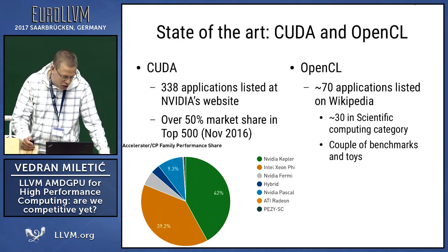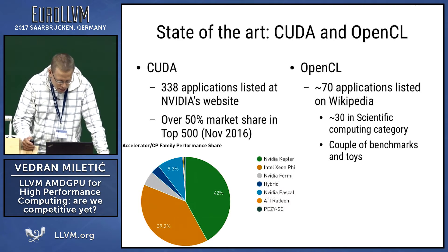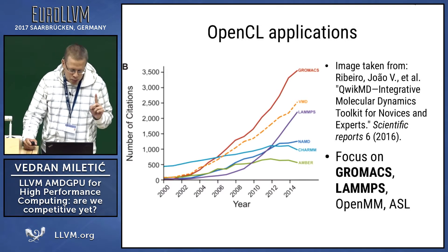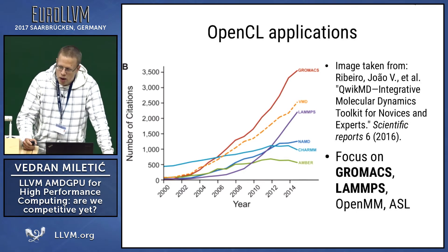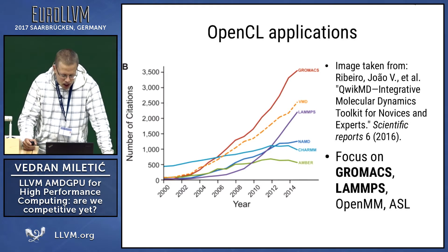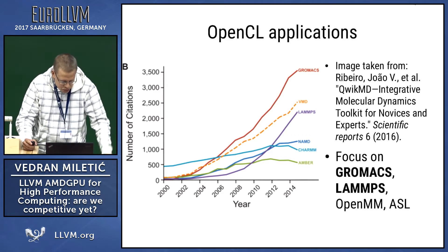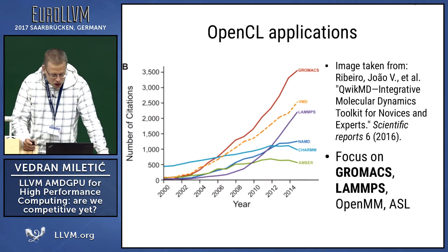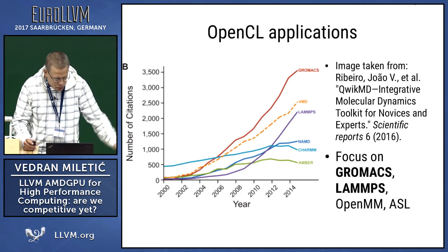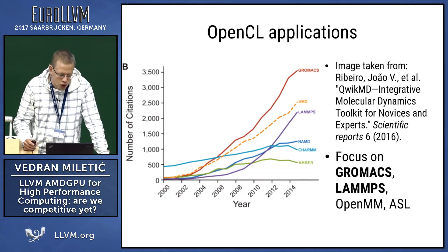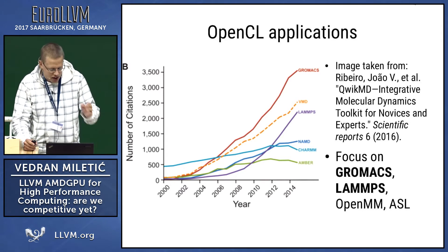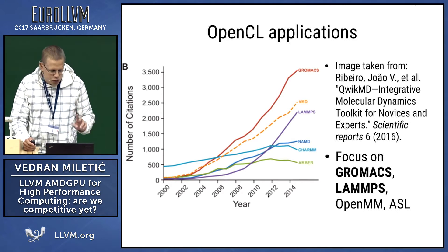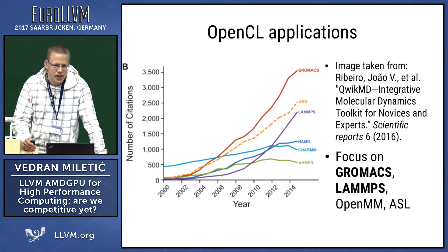A couple of those are benchmarks, toys, and small applications, so keep that in mind. When you look at those 30 scientific applications, some of them are actually very popular. The most popular molecular dynamics code that simulates molecules moving is GROMACS. It actually supports OpenCL since 2015, and also LAMMPS, which is the second most popular tool. VMD is just a visualization tool. Both of them support OpenCL as well as other APIs. Our work focused on getting GROMACS, LAMMPS, and two more tools — OpenMM and ASL — running on the Radeon open source driver.